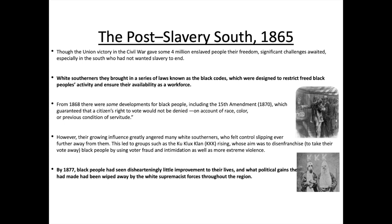From 1868 there were some developments for black people, including the 15th Amendment in 1870, which guaranteed that a citizen's right to vote would not be denied on account of race, colour, or previous condition of servitude — meaning you could vote as an American citizen whether black, white, or a former slave. However, their growing influence greatly angered many white southerners, leading to groups such as the Ku Klux Klan rising, whose aim was to disenfranchise black people through voter fraud, intimidation and extreme violence. By 1877, black people had seen dishearteningly little improvement to their lives and what political gains they had made were wiped away by white supremacist forces throughout the region.